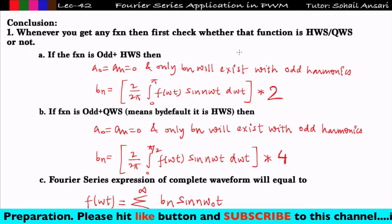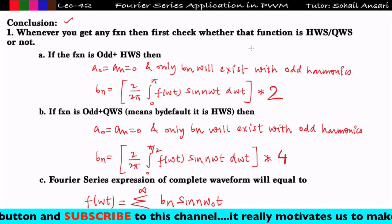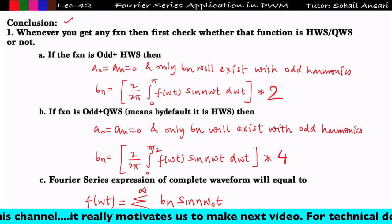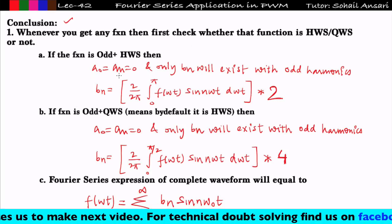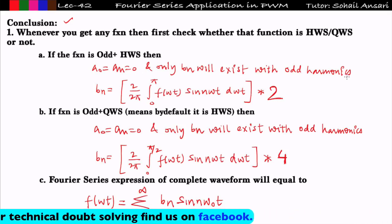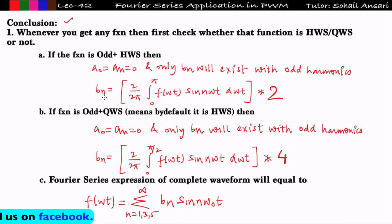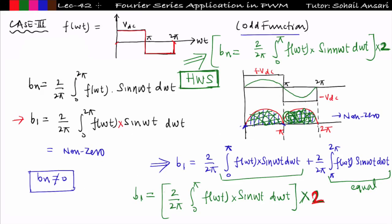Let us conclude what we saw in this lecture. Whenever you get any function, first check whether it is half-wave symmetry or quarter-wave symmetry. If the function is odd and half-wave symmetry, then a₀ and aₙ = 0, only bₙ exists with odd harmonics — integrate from 0 to π and multiply by 2. If the function is odd plus quarter-wave symmetry, integrate only from 0 to π/2 and multiply by 4. The overall Fourier series expression is f(ωt) = summation of bₙ·sin(nω₀t) with only odd harmonics. I am sure you understood each and every concept of how to find these things.